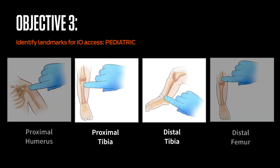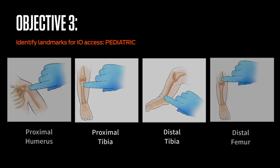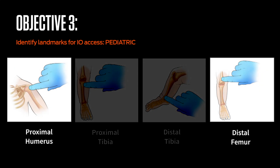These slides illustrate pediatric proximal and distal tibial access sites. Note that each site on the pediatric tibia is located medially and approximately 1 centimeter from the adjacent joint. This slide illustrates the pediatric distal femur and proximal humeral sites. The pediatric distal femur site is located medially, midline, 1 centimeter proximal to the patella. The pediatric proximal humeral site is located laterally and approximately 1 centimeter from the adjacent joint.